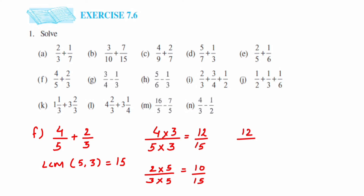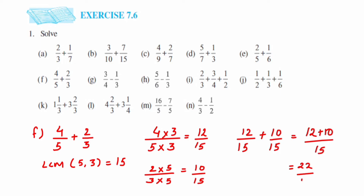Instead of 4 by 5 and 2 by 3, we take 12 by 15 plus 10 by 15. Since denominators are the same, we add the numerators: 12 plus 10 is 22. So the answer is 22 upon 15. We cannot cancel this number further, so we leave it here.